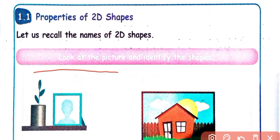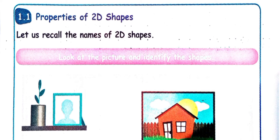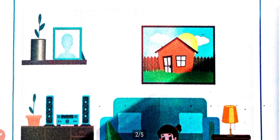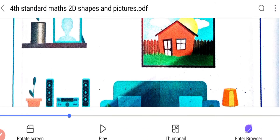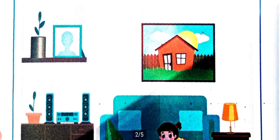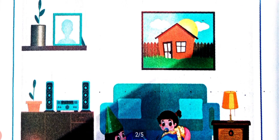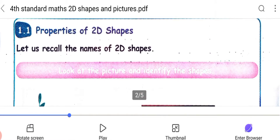Look at the picture and identify the shapes. If you have a picture, then you can see shapes. So, we can identify the shapes. We can see the photo frame in a square shape.